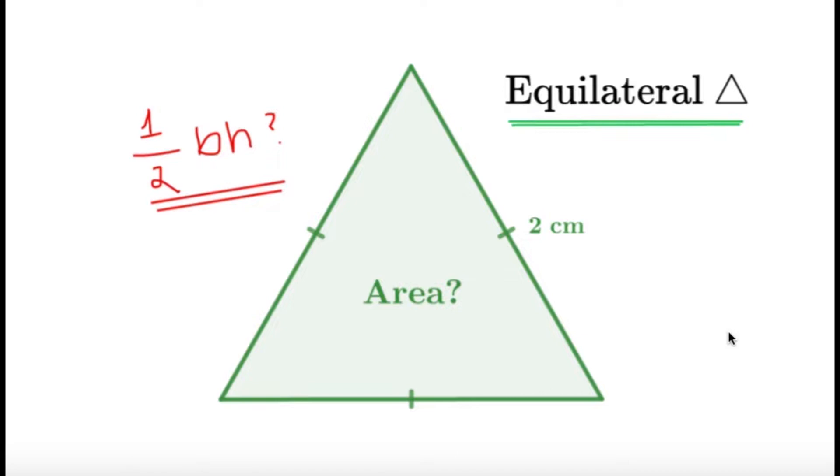Now in first thought, we want to try to use 1 half base times height, which is possible, but today I'll be showing you two ways to get the area of this equilateral triangle. So the first method is to try to use the 1 half base times height, which is the formula that we are all familiar with. So let's try to do that.